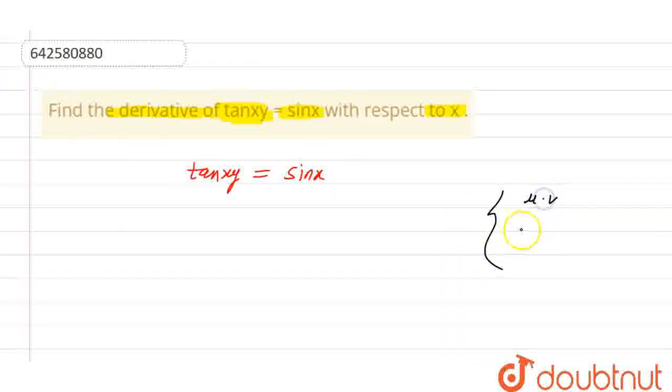So, u into v equal to u as it is differentiation of v plus differentiation of u and v as it is. This is the rule of product rule which we need to apply in the angle of tan that is on x and y, xy.